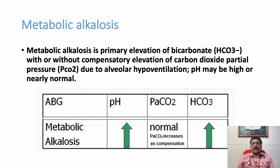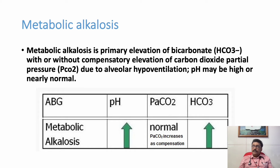PaCO2 is either compensated or not compensated. When bicarbonate is elevated in our body, it is mainly managed by the buffering system between the kidney and lung. The kidney plays a major role in adding or removing hydrogen ion to produce or remove bicarbonate from the blood. In metabolic alkalosis, bicarbonate levels increase, the blood becomes alkaline, and pH increases.